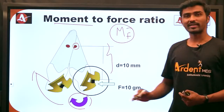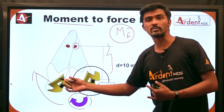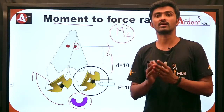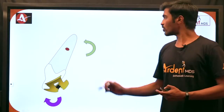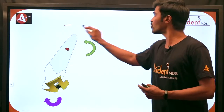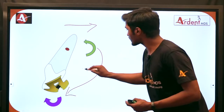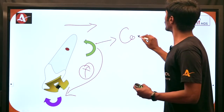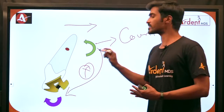This clockwise moment of a force causes tipping of the tooth, which can be either controlled tipping or uncontrolled tipping. These can be differentiated only by means of the moment to force ratio. If I don't want such tooth movement and want only bodily movement, I should apply a force that counteracts this moment. This counteracting moment is called the counter moment (Mc).